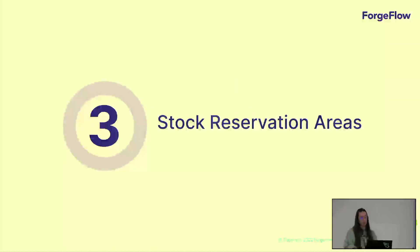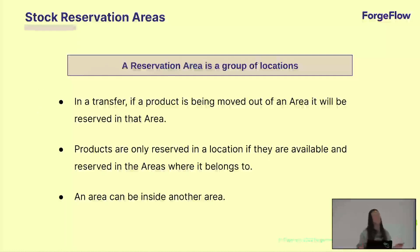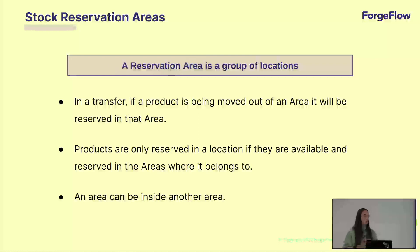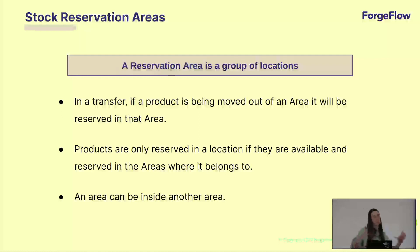So our proposal is stock reservation areas. A reservation area is just a group of locations — it's a very simple idea. Each time a product is moved out of an area, it is reserved in that area. Products can only be reserved locally in a location if that quantity is available in all the areas that product belongs to, because we can have areas inside other areas and a product can be in many areas at the same time. For example, you can have a warehouse area, and then inside the warehouse a stock one area.